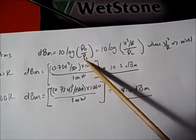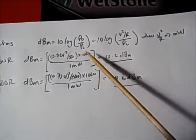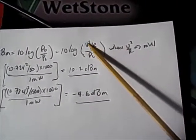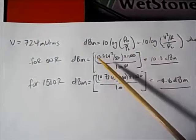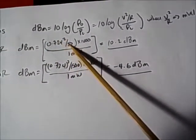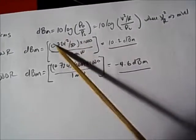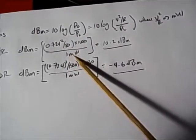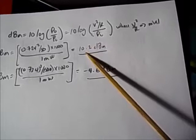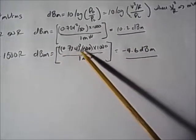The way to calculate dBm is the log of 2 power ratios, where you're comparing to 1 milliwatt — so output power versus 1 milliwatt. Power is V squared over R, and that value needs to be in milliwatts. For the 50 ohm load: 724 millivolts squared divided by 50, times 1000 to get milliwatts, divided by 1 milliwatt. That comes out to 10.2 dBm — and we saw 10 dBm on the scope, so that's in agreement.